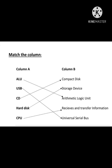Next is Hard Disk. What is hard disk? It is a storage device. The second option in column B is the correct one. We will match hard disk with storage device.